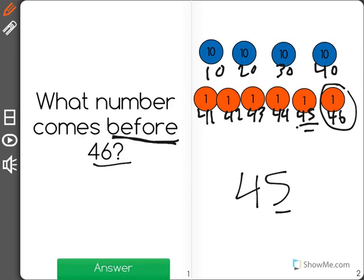And as you know, 5 comes right before 6, and we're still on the 40. So the correct answer is 45 is the number that comes right before 46.